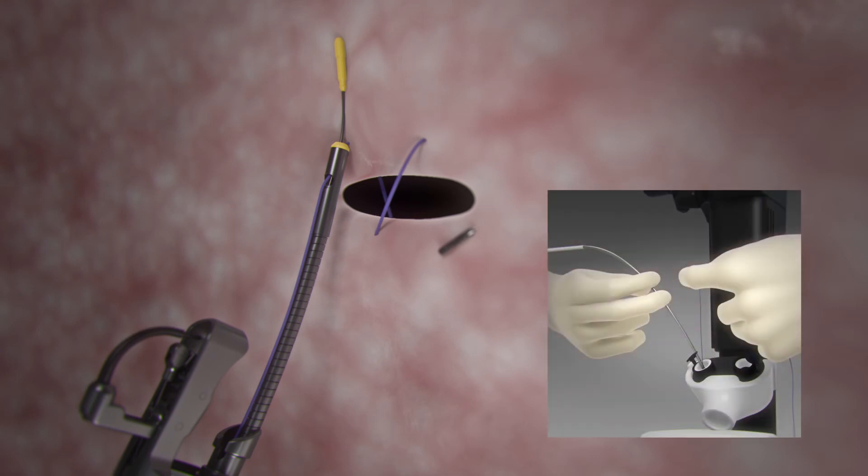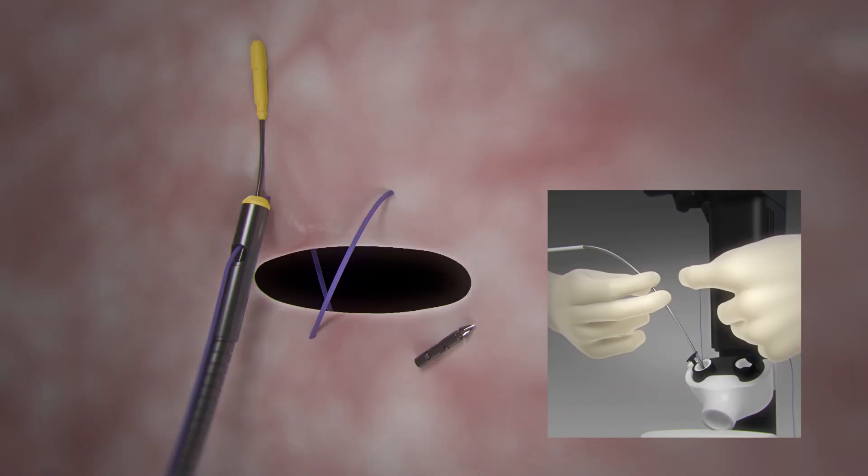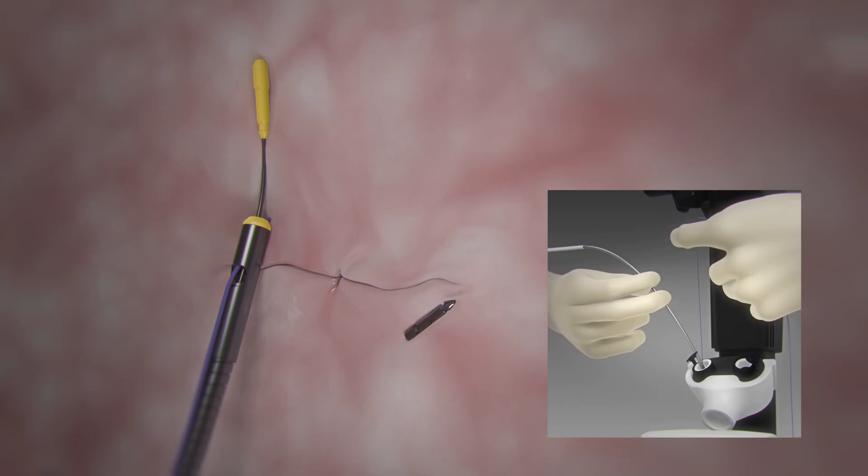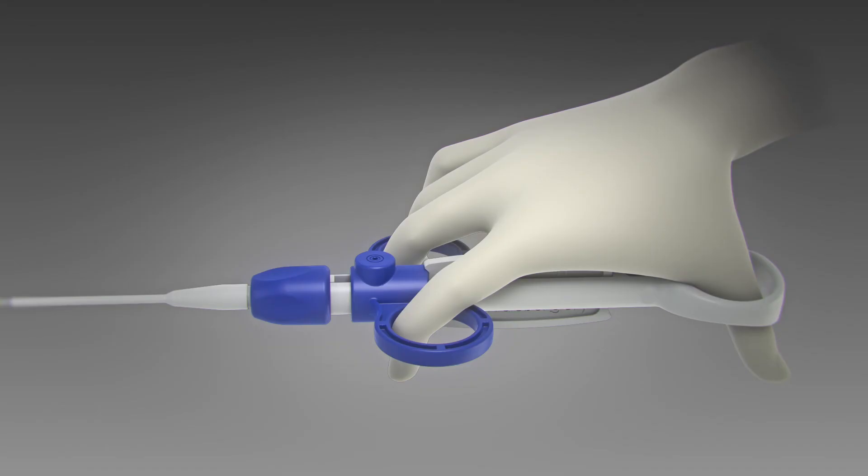While holding the cinch catheter in place, apply tension to the suture with small increasing increments of force. Care should be taken not to pull the suture too tight, resulting in breakage. Once the desired amount of tension is reached, open the cinch handle with the palm facing down. This will release the safety mechanism.